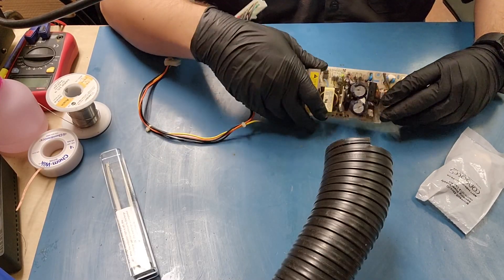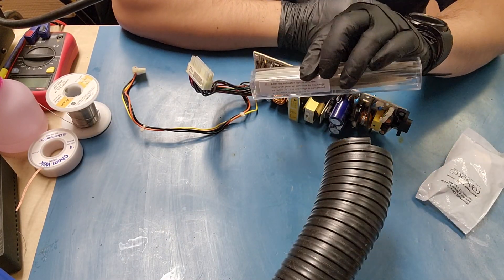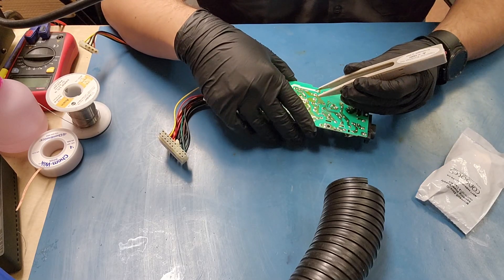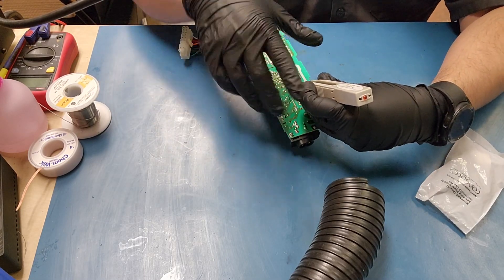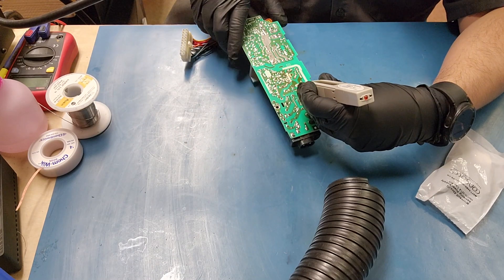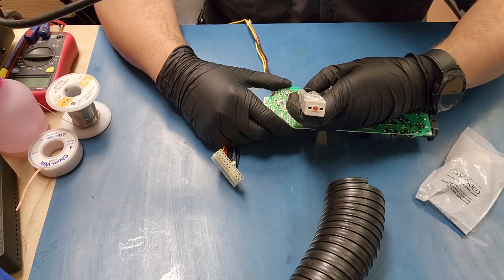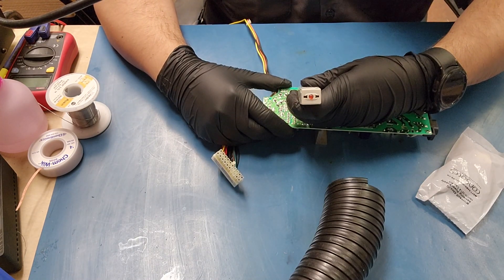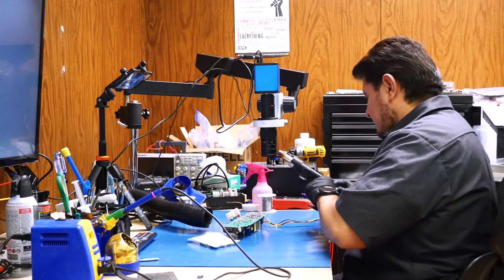First thing you want to do is discharge the capacitors. So I have this discharging tool right here and you'll want to just do that on the larger caps. This red light would be on if there was a charge. Now that we know we're safe, let's go ahead and begin.